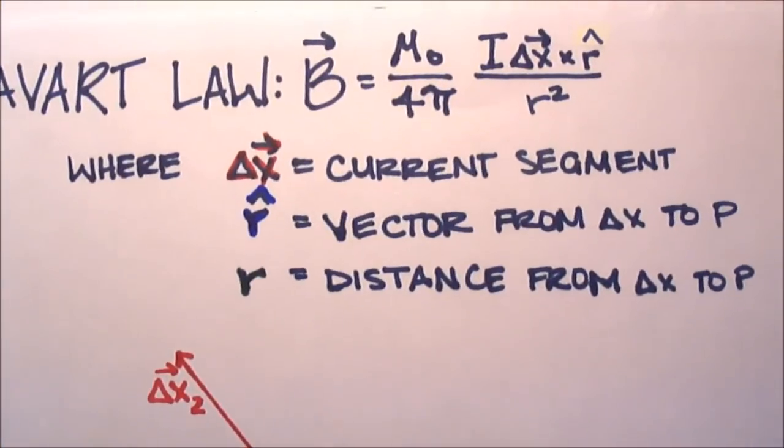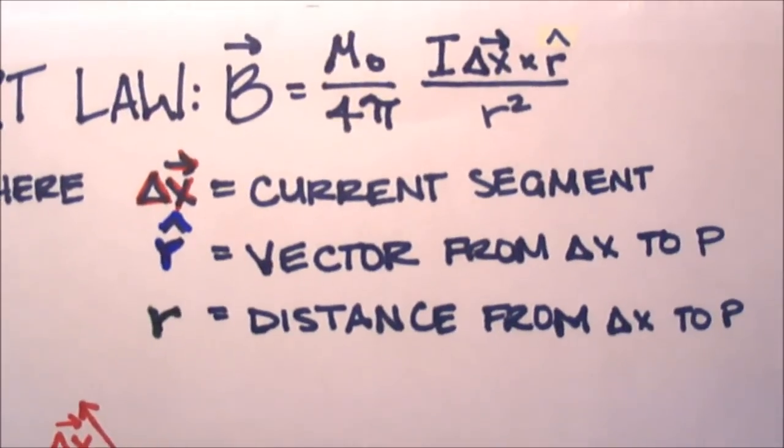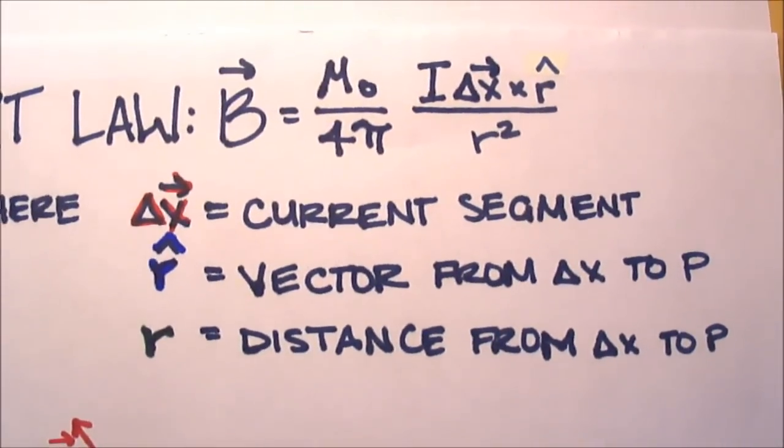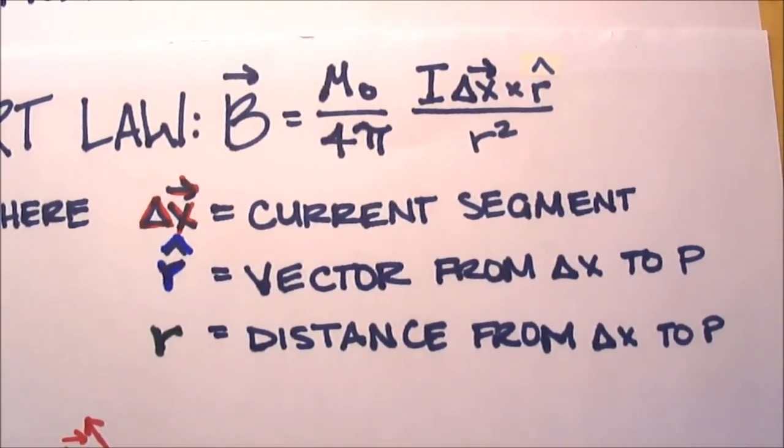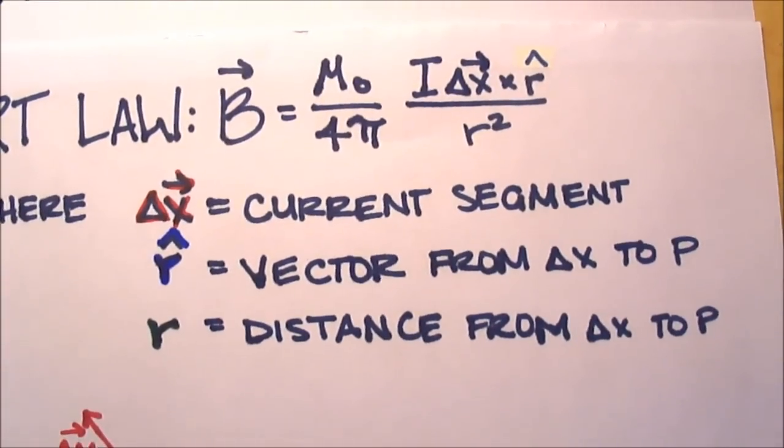This may seem overwhelming at first, but we know that B is our magnetic field. μ₀ is just a constant, and 4π is just a number. We know I is just current. The three that you might be unfamiliar with are this Δx⃗ vector, which is the current segment.